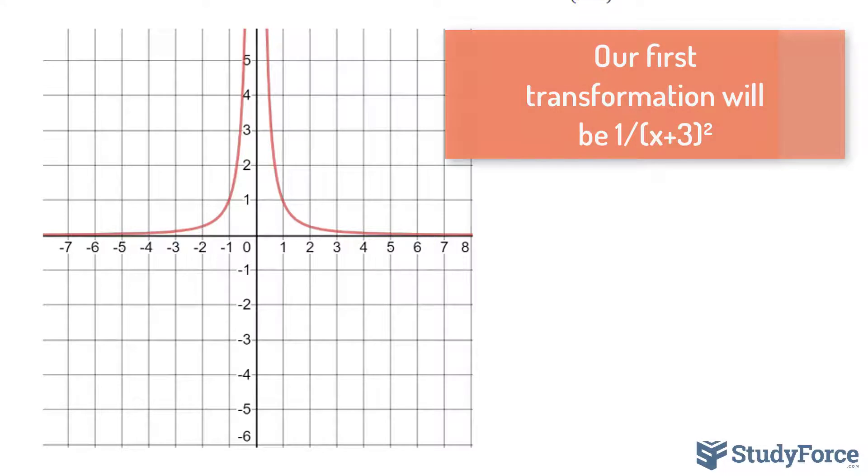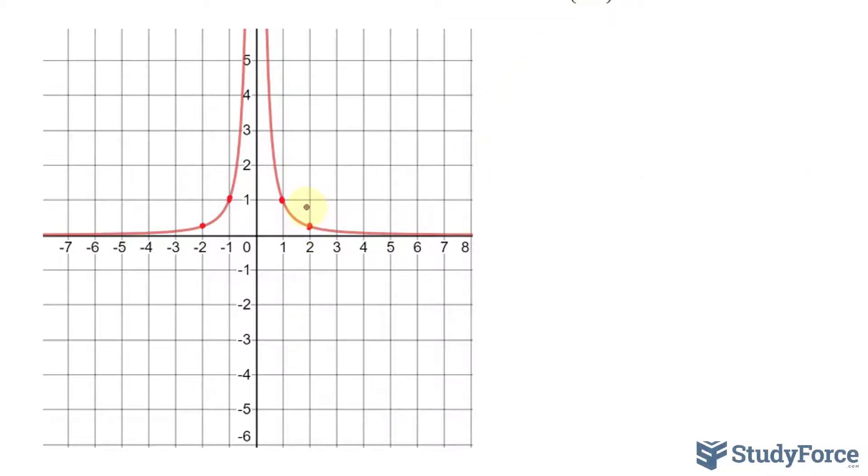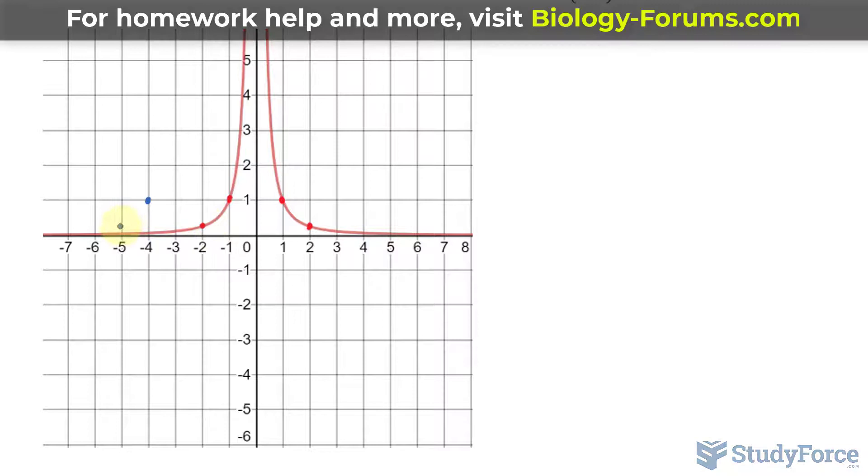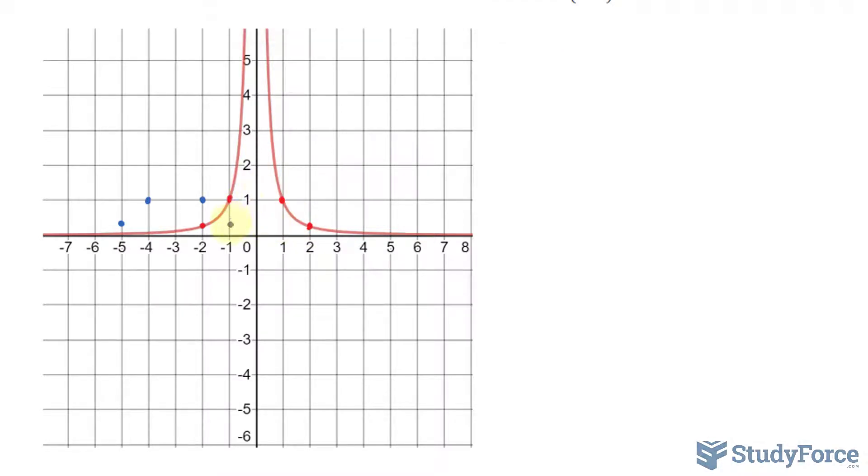So I'll pick a few random points along this curve, namely this one, that one, and two others as reference points. This and that. And like I mentioned, I'll be shifting this 3 units to the left. This point will be 1, 2, 3, right over here, and this point should be right here, and similarly, 1, 2, 3, and 1, 2, 3, right here.